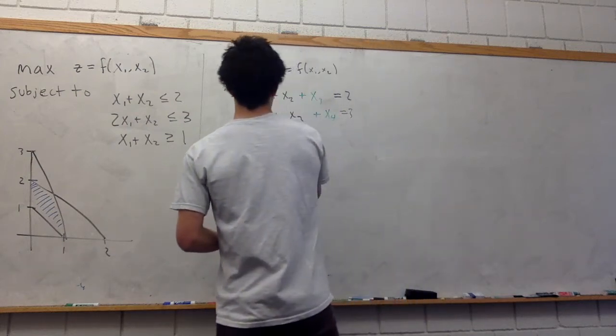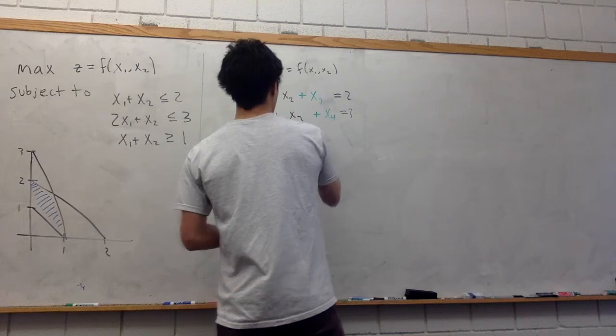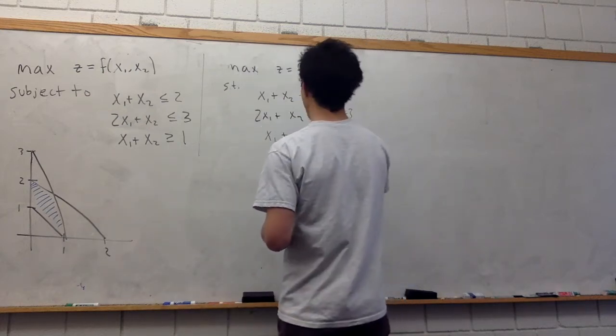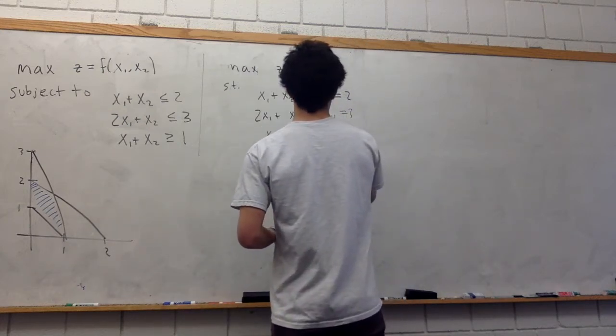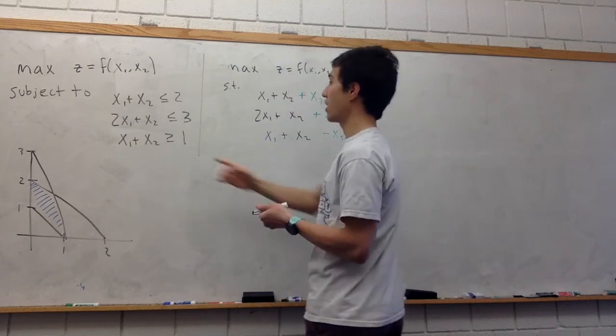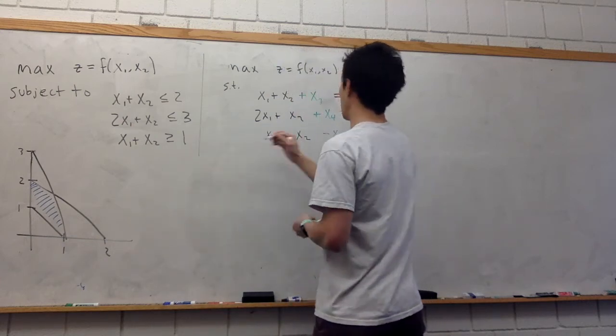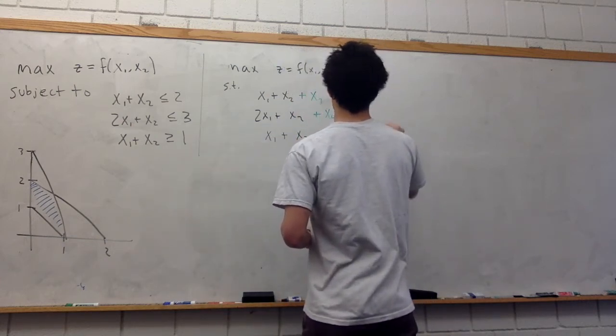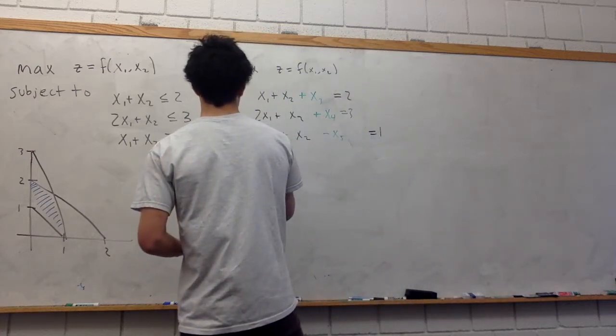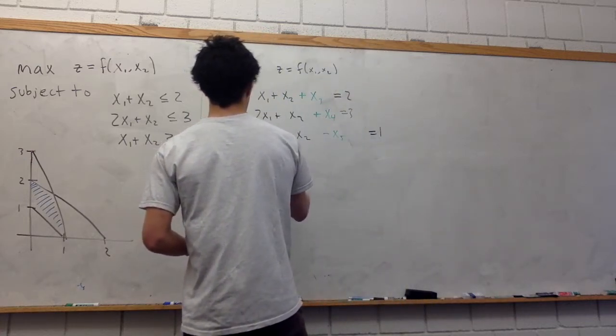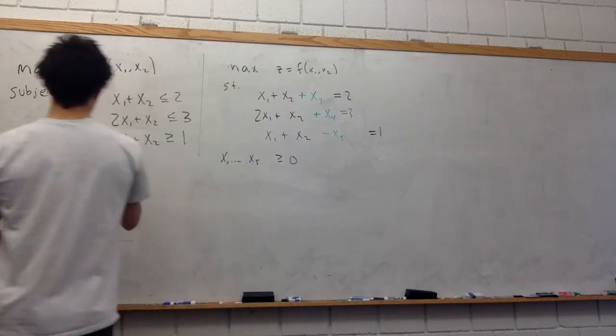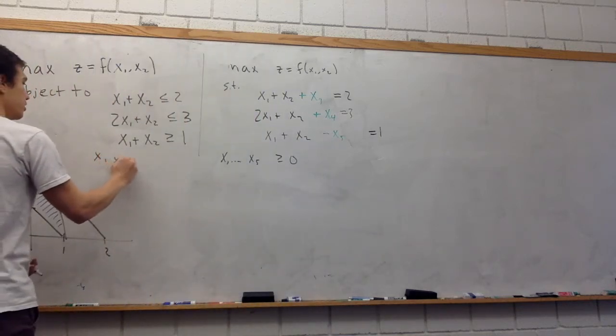And x1 plus x2, we'll add in this slack variable minus x5, since this is a greater than or equal to inequality, is equal to 1. And x1 through x5 should be greater than or equal to 0. I should say x1 and x2 should be greater than or equal to 0 here.